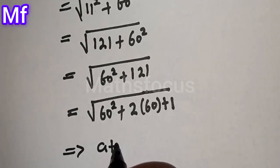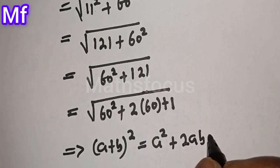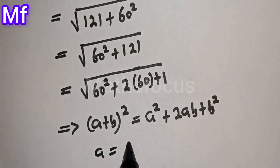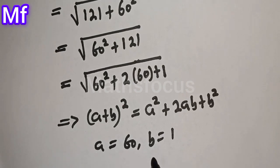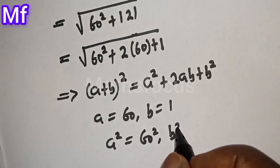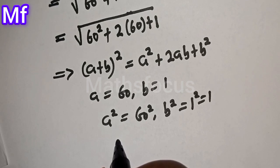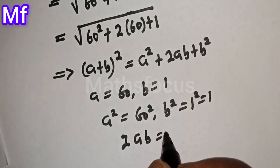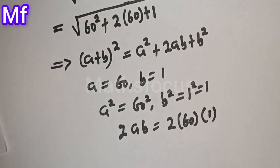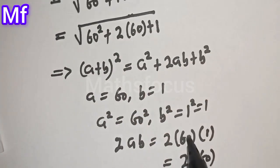Now take note that if you have a plus b squared, this is equal to a squared plus 2ab plus b squared. From here, a is equal to 60, b is equal to 1. Then a squared is equal to 60 squared, b squared is equal to 1 squared which is equal to 1. Then 2ab is equal to 2 multiplied by 60 multiplied by 1, which is equal to 2 multiplied by 60. So now if you compare all of these, this is equal to this.